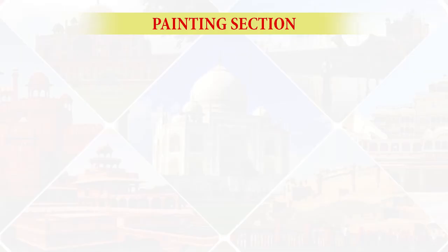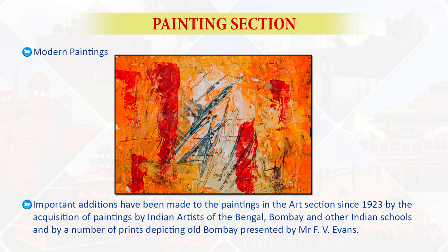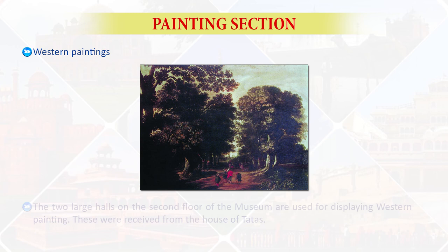The museum has some interesting early Pahari paintings depicting rural rulers, and a number of paintings of the Jammu school depict Raja Balwant Singh engaged in various occupations. Important additions have been made to the paintings in the art section since 1923 by the acquisition of paintings by Indian artists of the Bengal, Bombay, and other Indian schools, and by a number of prints depicting old Bombay presented by Mr. F.V. Evans.